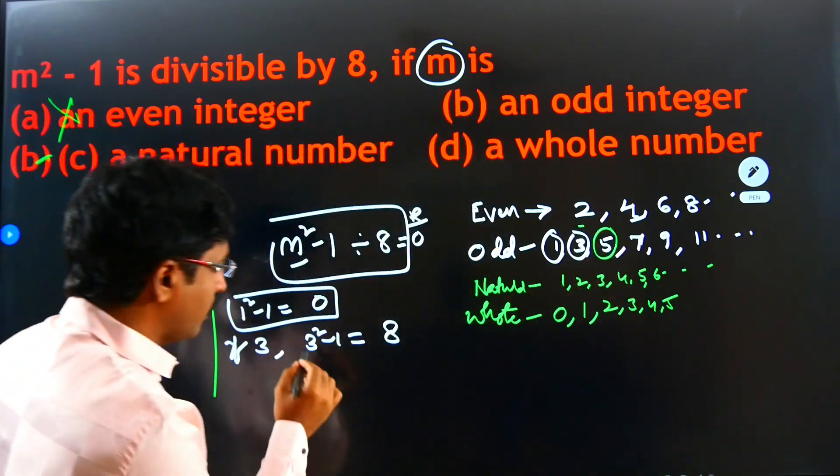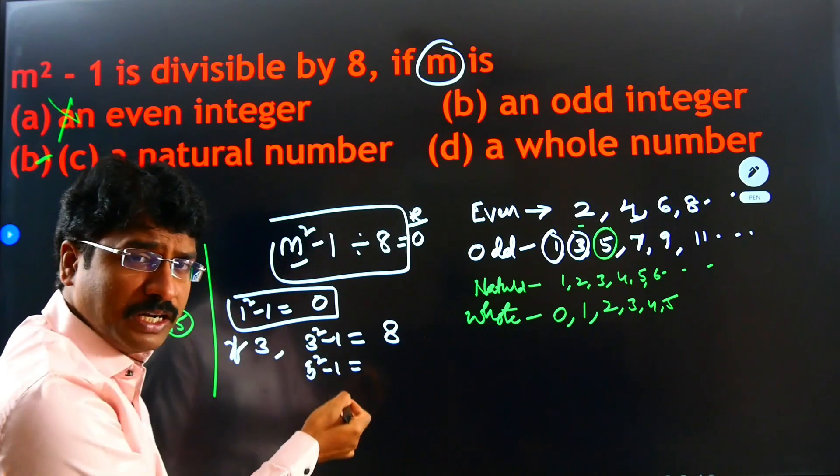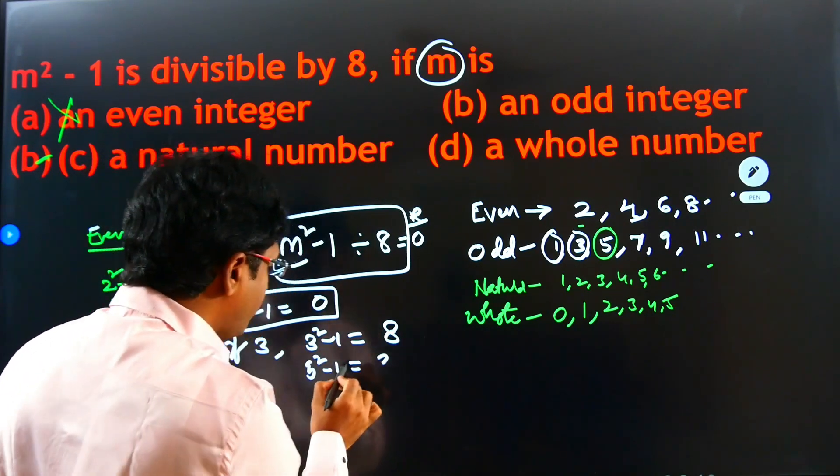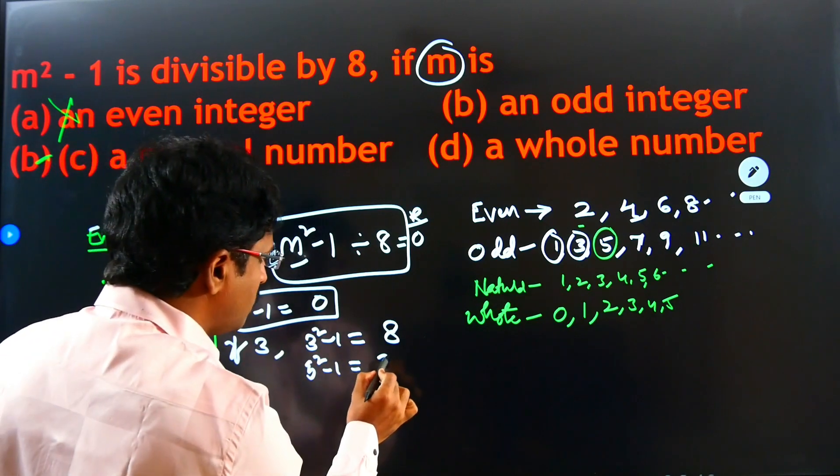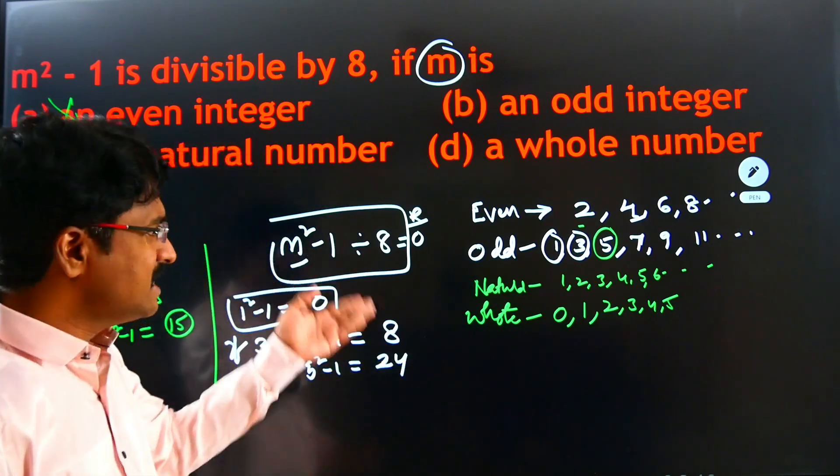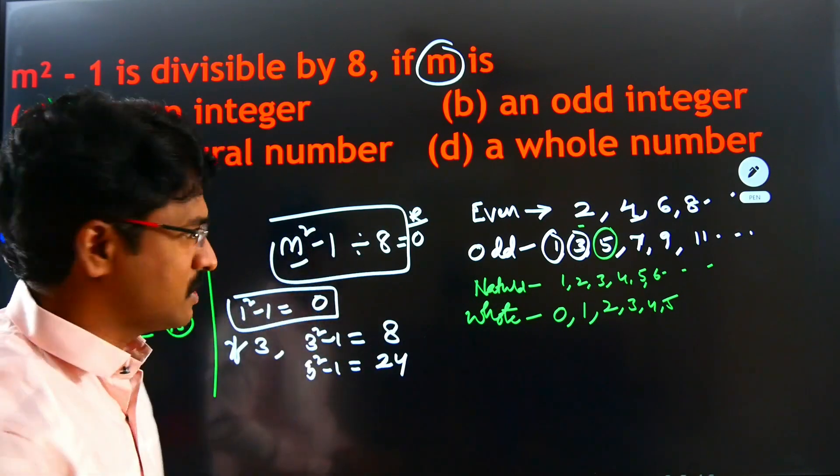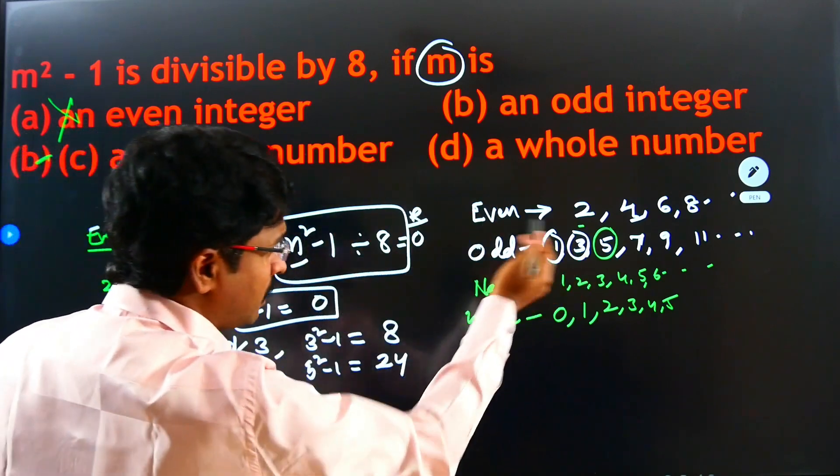Next, we'll take the 5. So, 5 square minus 1. 5 square means 25. 25 minus 1, 24. 8 times 3 is 24. In 8 table, 24 will come. That means this equation is possible with odd numbers.